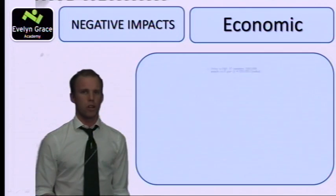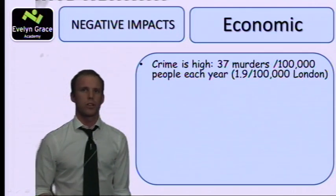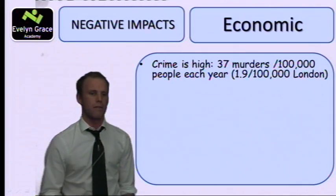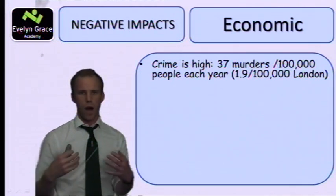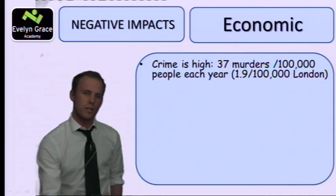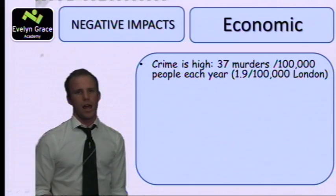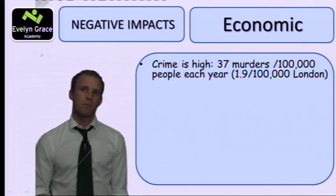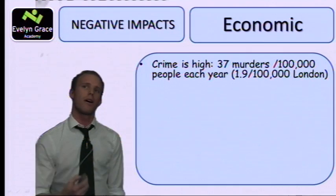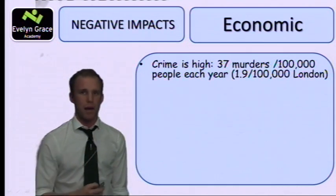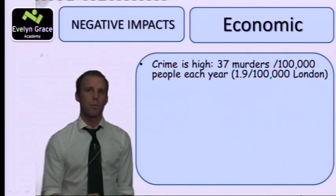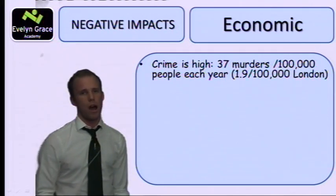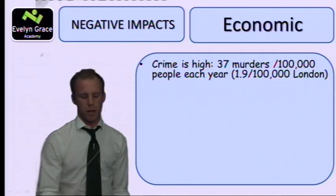The economic impacts: crime is high. In the favelas, people are congested together, desperate for money, and don't always find work, so people turn to crime. The statistic is 37 murders per 100,000 people per year in Rio, compared to London where it's 1.9 murders per 100,000 per year — significantly higher, making it a dangerous place to live.